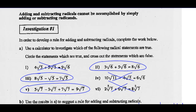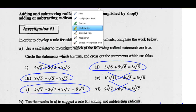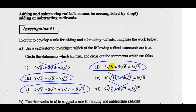What you should have found is that numbers 1, 4, and 6 do not work. Numbers 2, 3, and 5 do work. And then it asks you to suggest a rule for adding and subtracting radicals. What we should notice is if they've got the same radicand, we keep that radicand and simply add the coefficients — 3 plus 5 is 8.